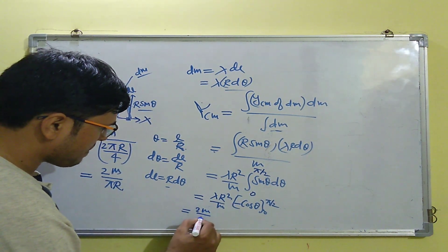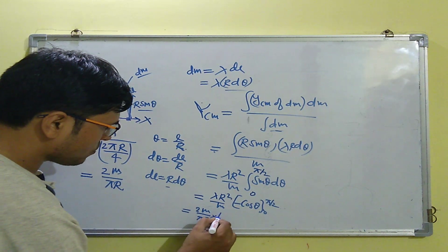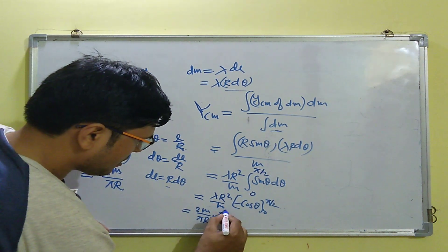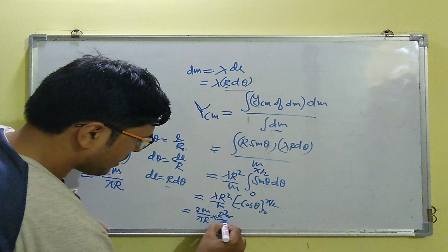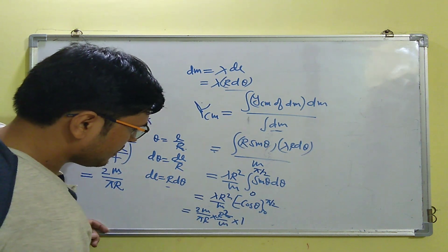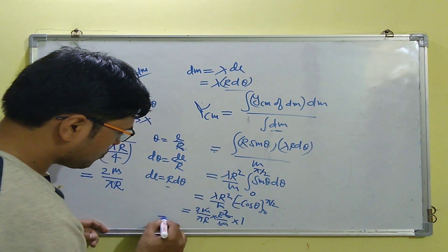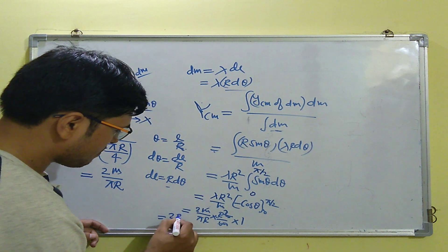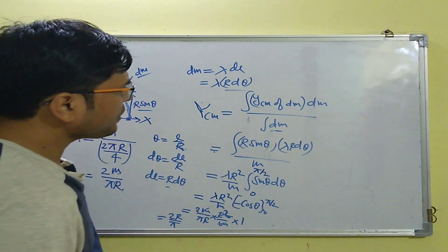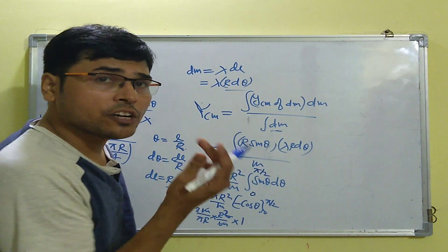Substituting the value of lambda: (2m/πr) · r²/m · 1, this simplifies to 2r/π. So y_cm = 2r/π. In the same way, we can also calculate the center of mass along the x-axis.